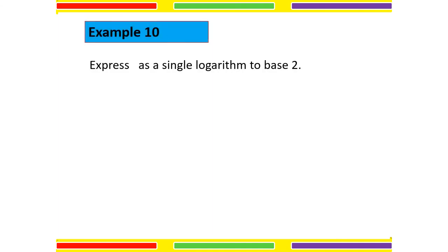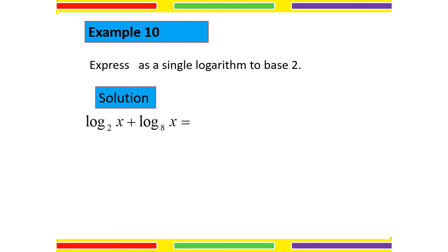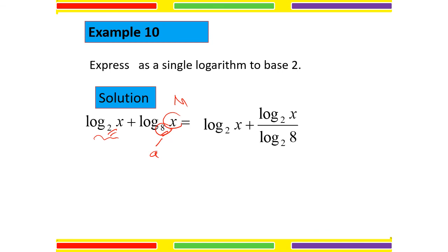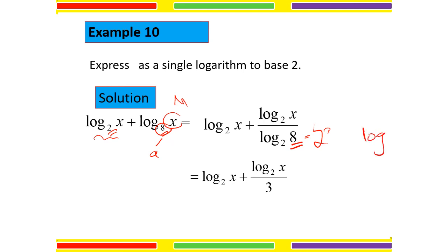Example 10: express as a single logarithm to base 2. The left side already has base 2. For the second term, we don't have base 2, so we change into base 2 using the change of base formula: log base X divided by log base 2 of 8. The denominator simplifies because 8 equals 2 to the power of 3, so log base 2 of 2 to the power of 3 gives 3 times log base 2 of 2, which equals 3. So the denominator becomes 3.